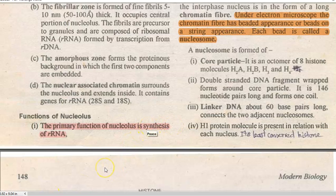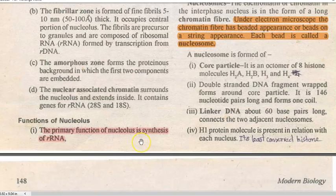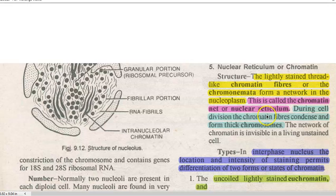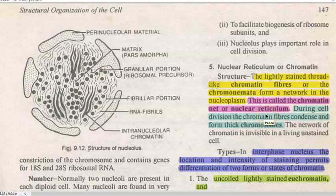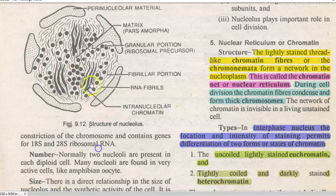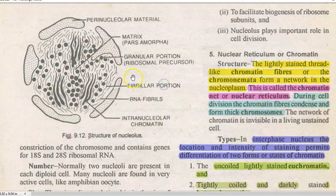The primary function of the nucleolus is to synthesize the rRNA of the cell. It facilitates the biogenesis of ribosome subunits, and it plays an important role in cell division. The four zones described can also be seen in the diagram provided.